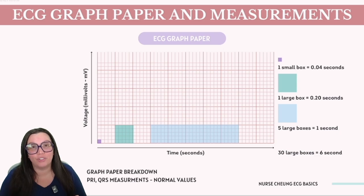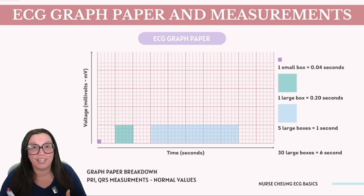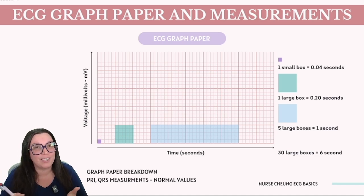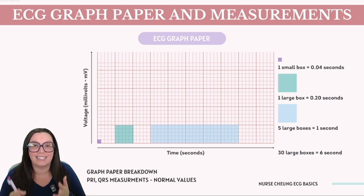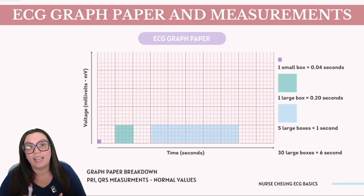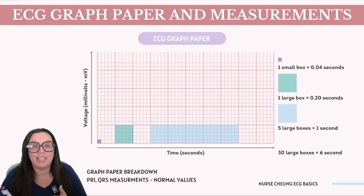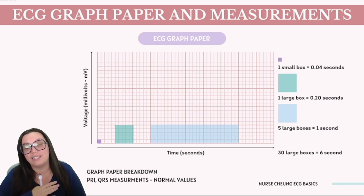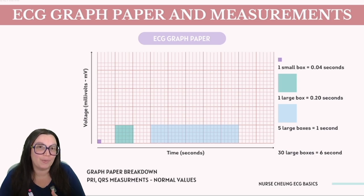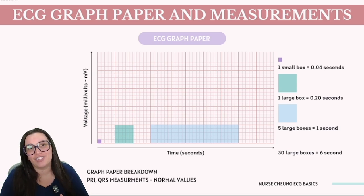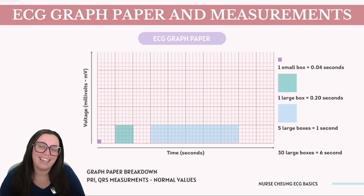When we say we're looking at a six-second strip, we're referring to a strip that has 30 large boxes, since 30 large boxes multiplied by 0.20 gives us six seconds. For irregular rhythms, we can multiply the number of waves seen across the entire six-second strip by 10 to give us the full heart rate per minute. This systematic layout is crucial for accurately measuring and timing the duration of various cardiac events, as well as identifying any potential abnormalities in the heart's rhythm.